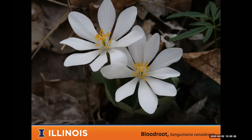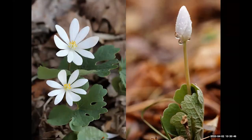Another really early one is bloodroot — one of my favorite flowers and probably the most photogenic spring wildflower. It's hard to see a bloodroot in bloom and not want to take a picture. They have many petals with bright yellow anthers and are really showy. The leaves are really unique-looking. It gets its name because if you dig it up or break the stem, the sap inside is a dark red color.